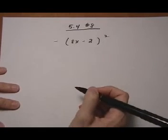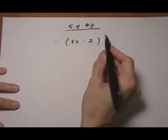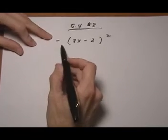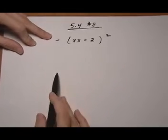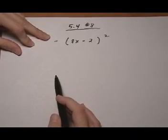5.4 number 8. Here we have a binomial being squared, and on the outside we have a minus sign. That minus sign is going to carry down as we square out the binomial, and at the very last step we're going to multiply it through the final answer.